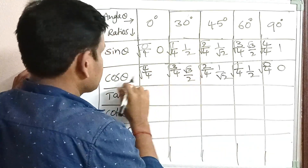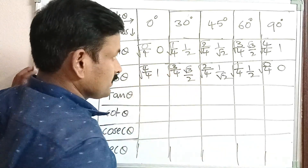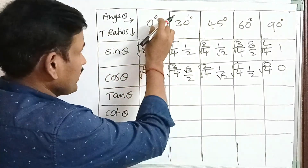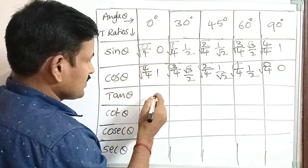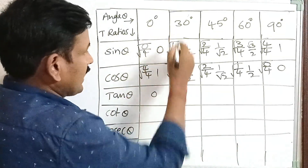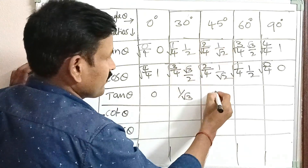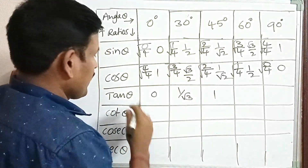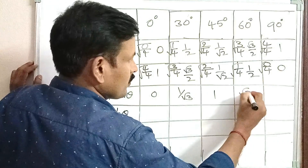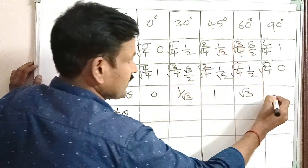Cos 0 is 1. Next, tan 0 is 0. Tan 30 is 1 by root 3. Tan 45 is 1. Tan 60 is root 3. And tan 90 degrees is infinite.